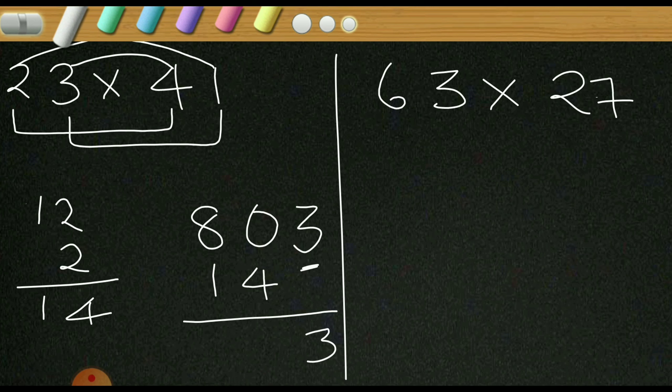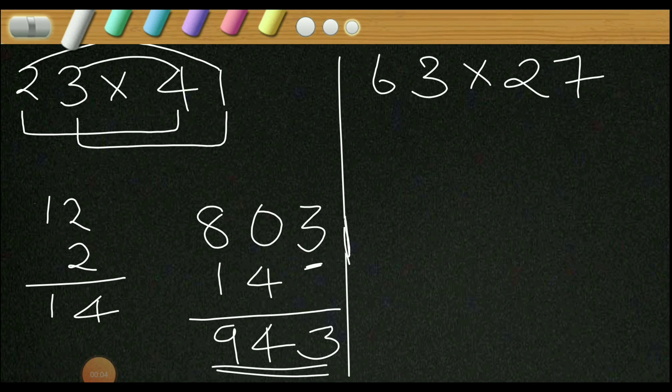So 943 is your answer. Okay, now similarly let us see how to multiply 63 into 27.